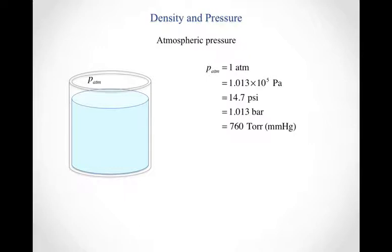So one atmosphere, atmospheric pressure happens to be equal to 1.013 times 10 to the fifth pascals. It's also 14.7 pounds per square inch. It's 1.013 bar. It's 760 torricelles, which is another way of saying millimeters of mercury. All these are different pressure units. Many of them are historical. This is the unit we're going to need most often when working problems in the SI unit system.